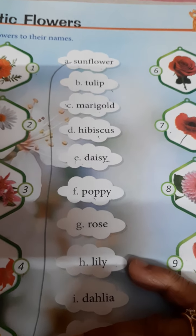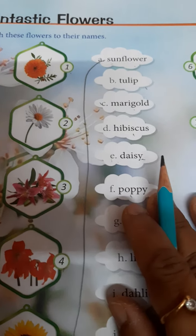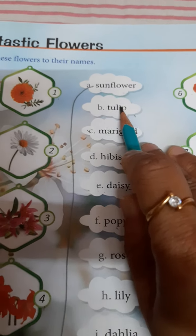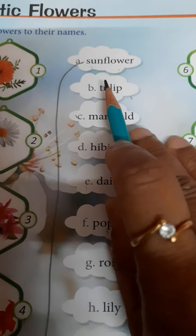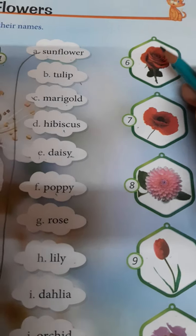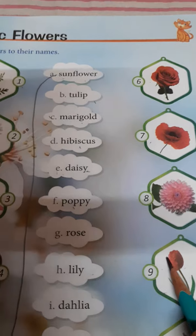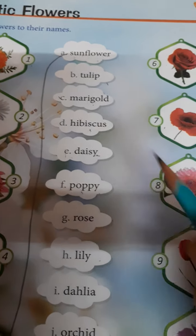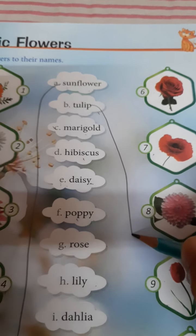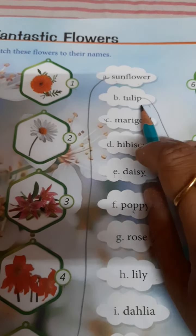Children, if you want, you can use different color pencils. Next flower name is tulip. So you see which one is tulip? This one is tulip. You match the flower to their name — join the flower name to the flowers.